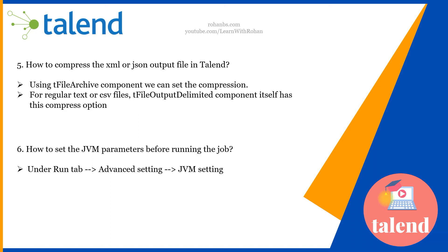The next question: how do you set the JVM parameters before running the job? This is a very important question because it avoids memory issues and crashes, and helps tune job performance. Before running the job, go to the Run tab, then Advanced Settings, and under that you have JVM settings. You can set the starting limit and the maximum limit for the Java Virtual Machine. Xms is your starting or minimum memory, and Xmx is the maximum memory limit.